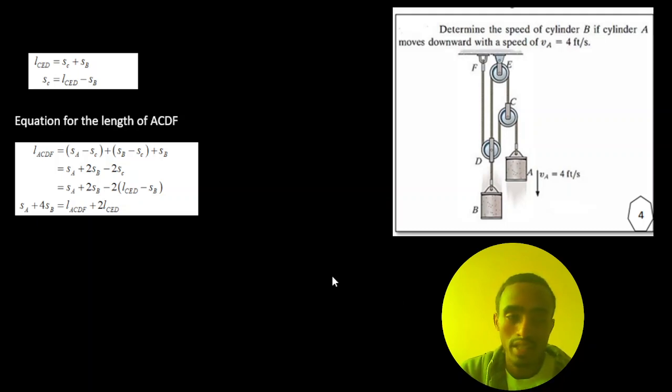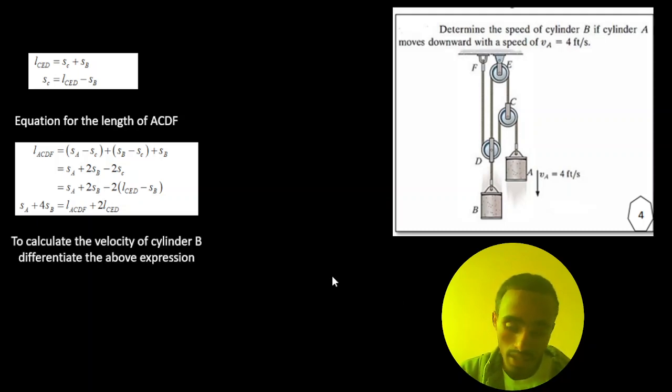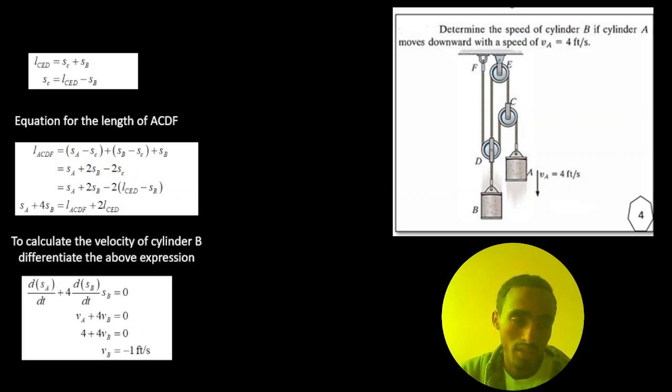So when you differentiate it, we can simply calculate the velocity of block B with respect to time. When you differentiate this, we can find the velocity of A. When you differentiate this, we can find the velocity of B is also constant because it's not changing. So 4VA plus 4VB equals 0. Then finally, you will get the velocity of block B is equal to minus 1 feet per second.